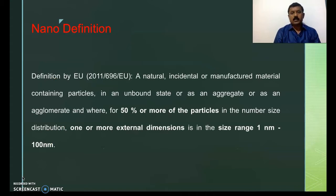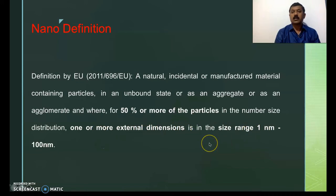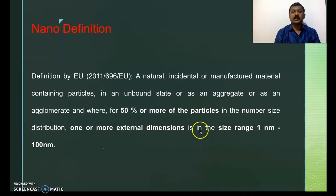The actual nano definition was given by the European Union in 2011, according to which a natural, incidental, or manufactured material containing particles in an unbound state, as an aggregate, or as an agglomerate, where for 50 percent or more of the particles in the number size distribution, one or more external dimensions is in the range of one nanometer to 100 nanometer. Two things are very important: size should be between 1 nm to 100 nm, and more than 50 percent of such structures must be present in the sample.